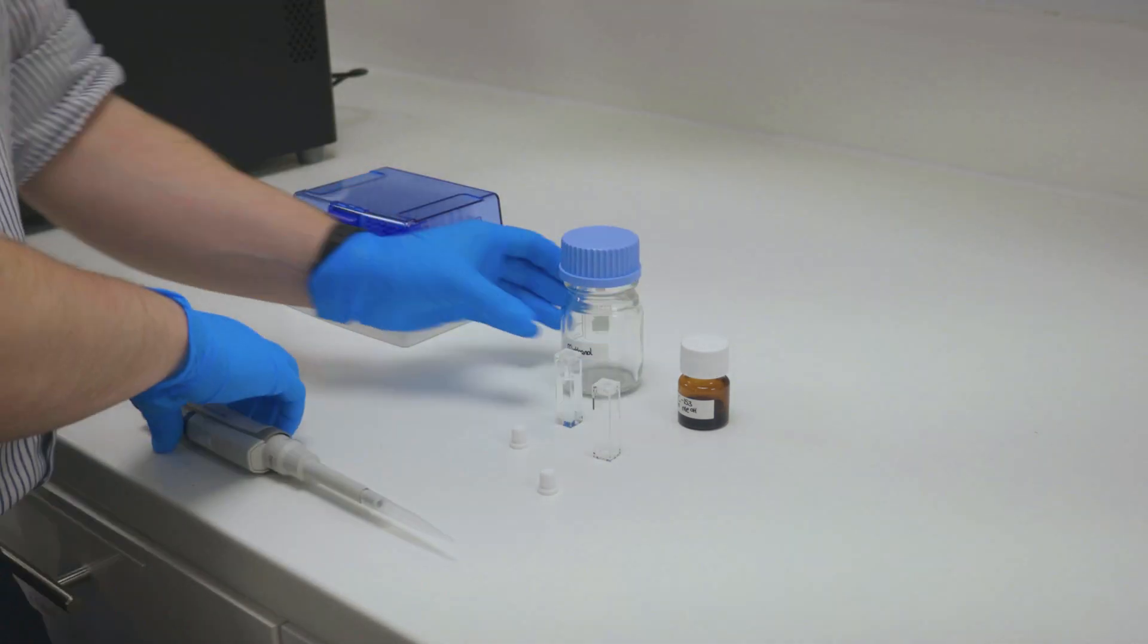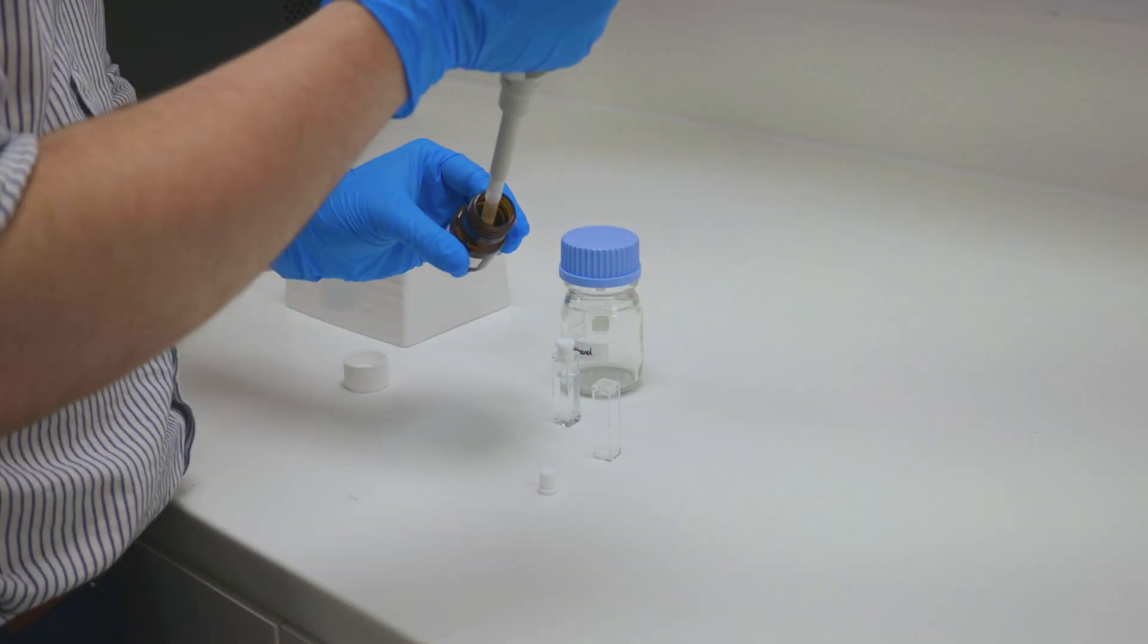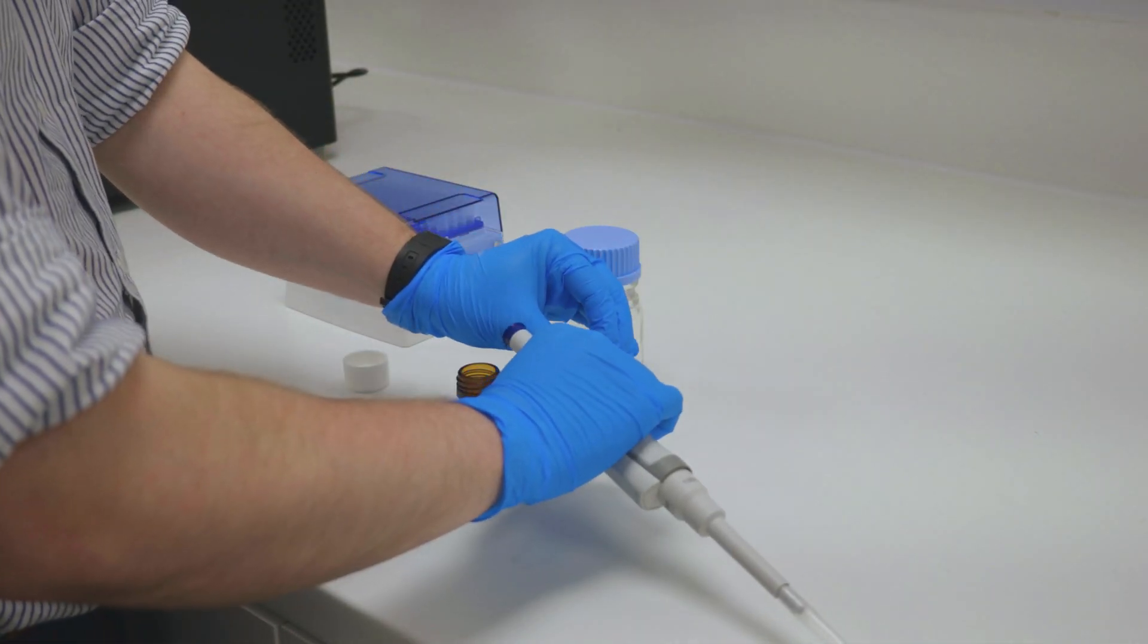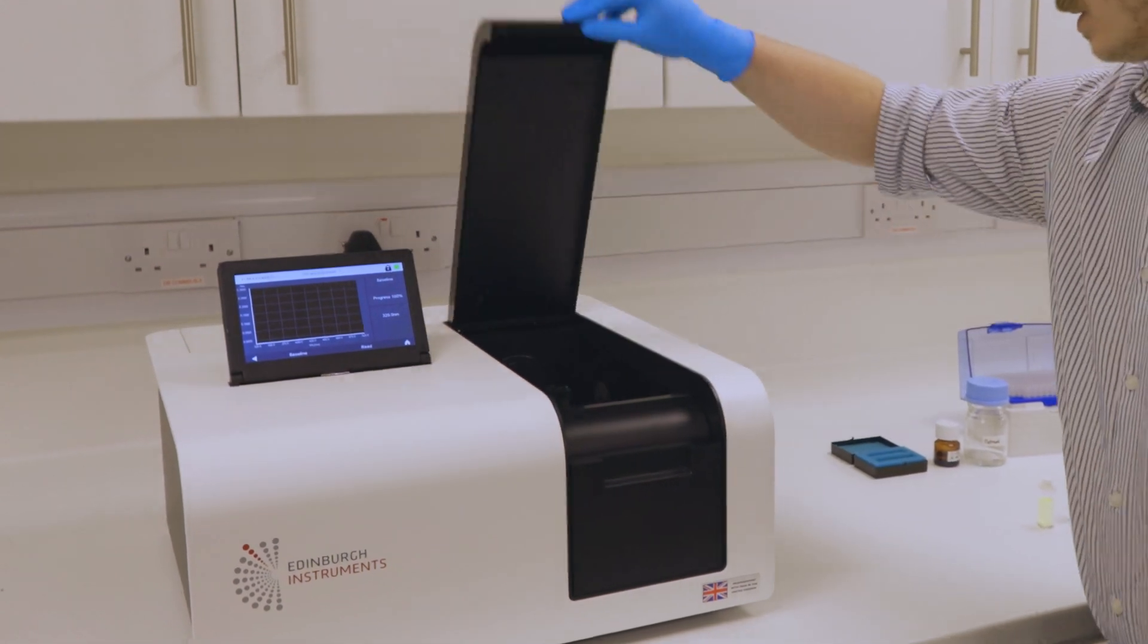I then use the Edinburgh Instruments DS5 UV-Vis spectrometer to determine the absorbance of our stock solution. You can also do this using the transmission detector on your instrument if it has one.